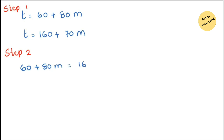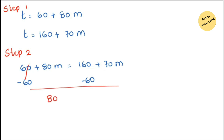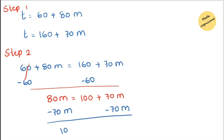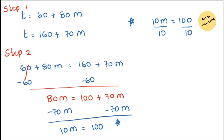Let's simplify the like terms. Subtract 60 from both sides, which cancels. We are left with 80m equals 100 plus 70m. Next, subtract 70m from both sides: 80m minus 70m equals 10m, so 10m equals 100. This is a multiplication equation, so divide both sides by 10, which gives m equals 10. After 10 months the costs will be equal.